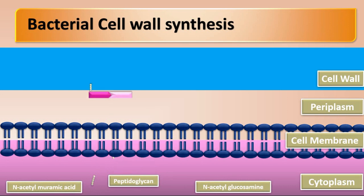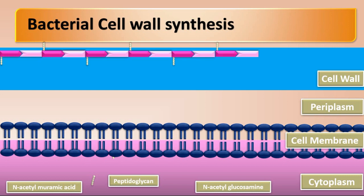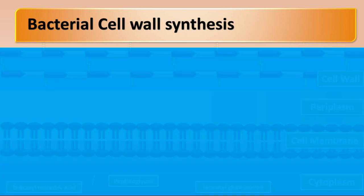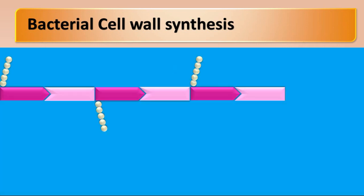This precursor unit is then transported through the cell membrane to the periplasm. These units are incorporated in the cell wall by forming polymer chains of these units. This process is called transglycosylation.